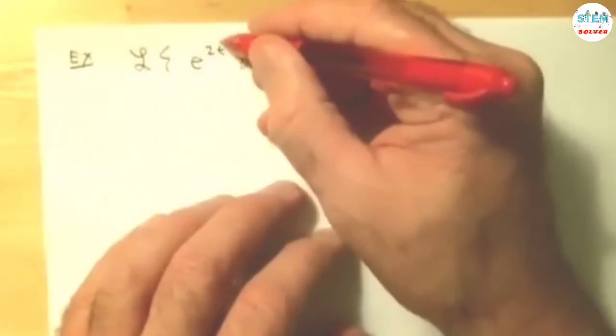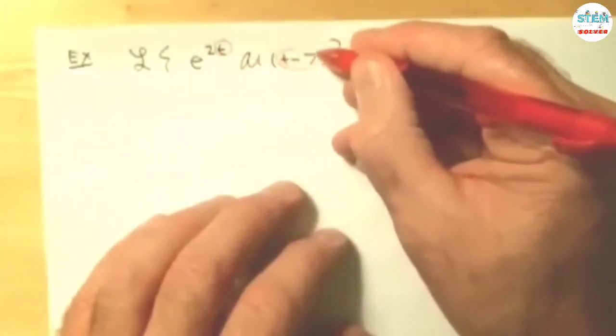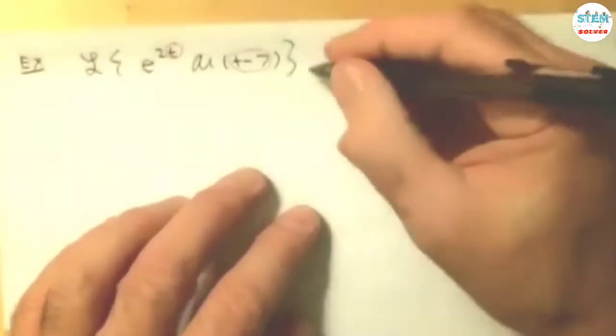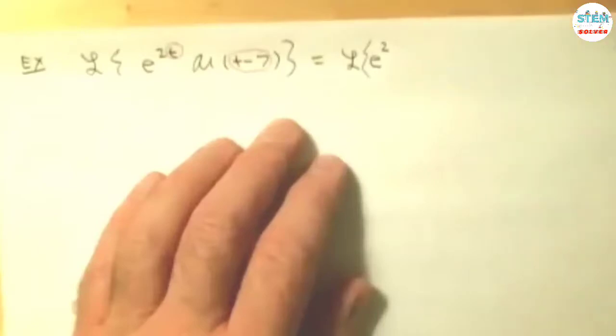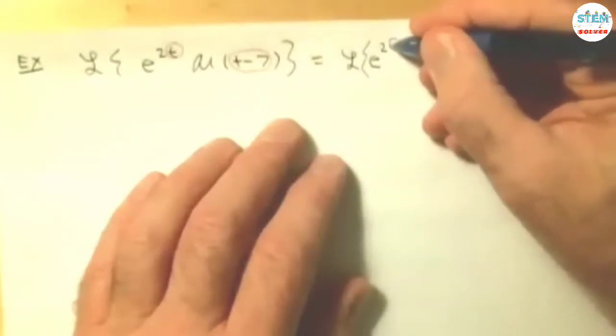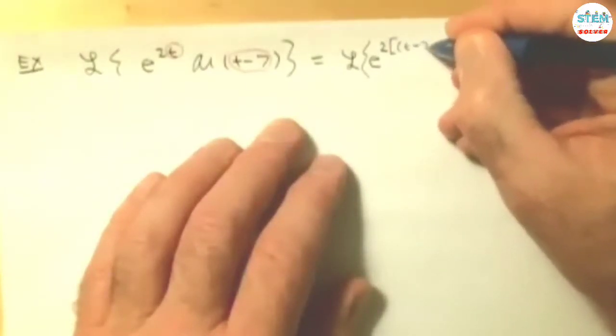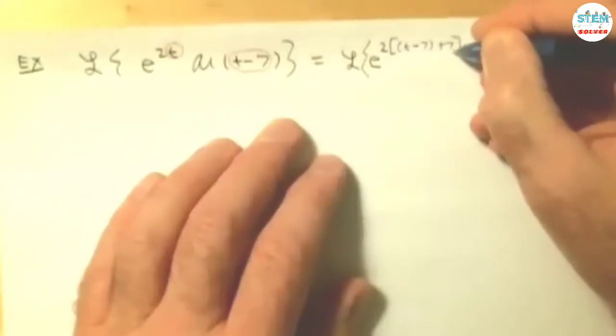Well, again, what I want is these arguments to match up. I want this to be this, right? I'm going to write this as t minus 7, which is what I want, and I'm going to add this up.